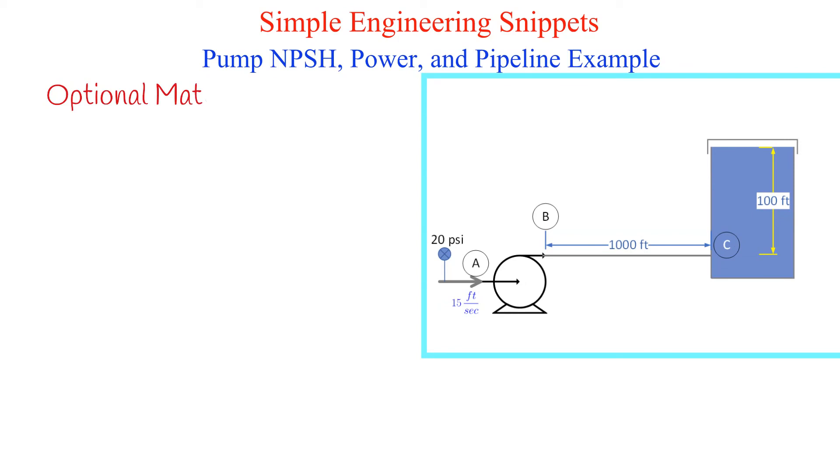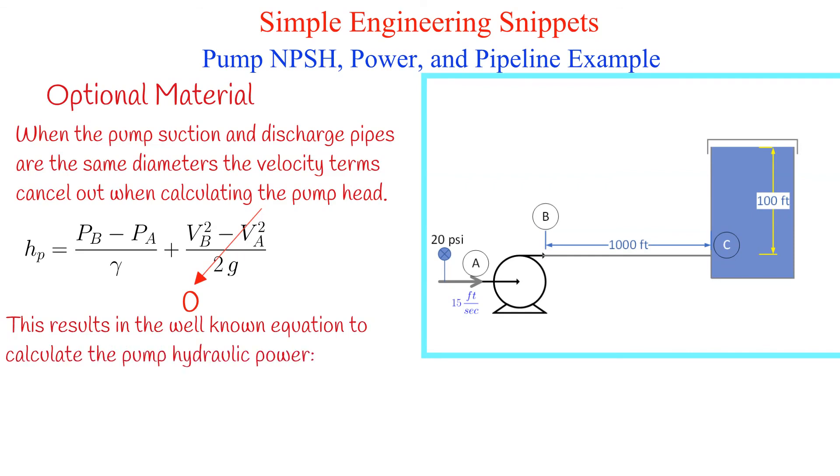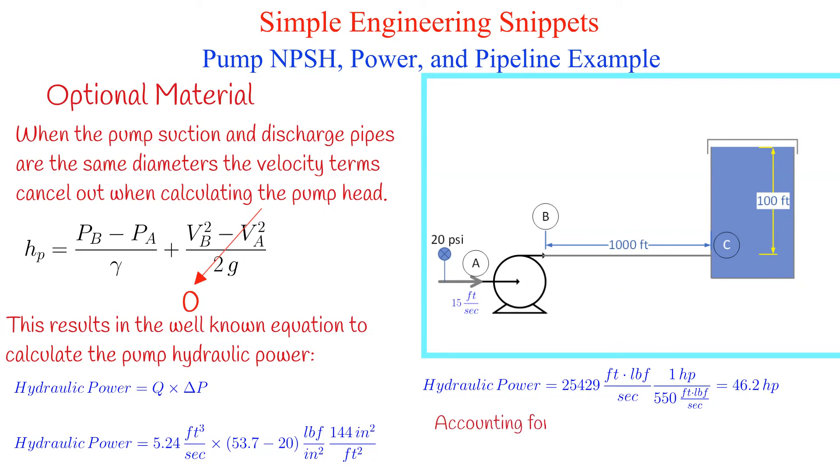For many pump installations the diameters of the suction and discharge pipes are the same resulting in the same velocities at the suction and the discharge. The velocity terms cancel out when calculating the pump head. I am skipping the details but this leads to the well-known equation for hydraulic power. Hydraulic power is equal to the volumetric flow rate times the pressure rise across the pump. Using this approach we obtain 46.2 horsepower for the hydraulic power versus the value of 49.1 horsepower. In this example that equates to an almost six percent error.